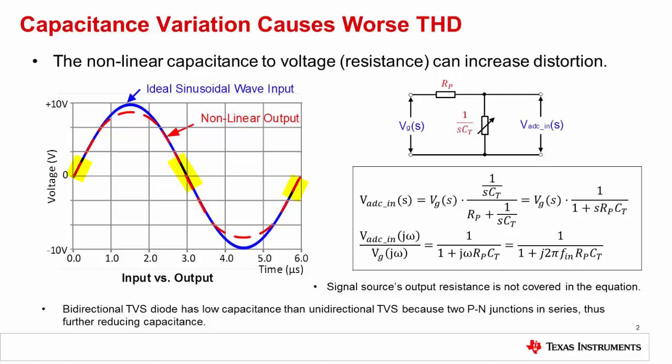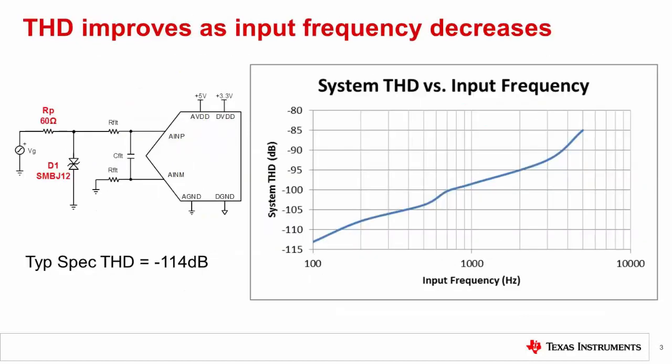Notice in this example that the output signal tracks the input well for voltages close to 0, but as the input nears the peaks, the output no longer tracks the input due to the filter attenuation. Under normal circumstances, it may be difficult to realize by looking only at the output waveform, but as you can see on the slide, it is no longer a pure sine wave.